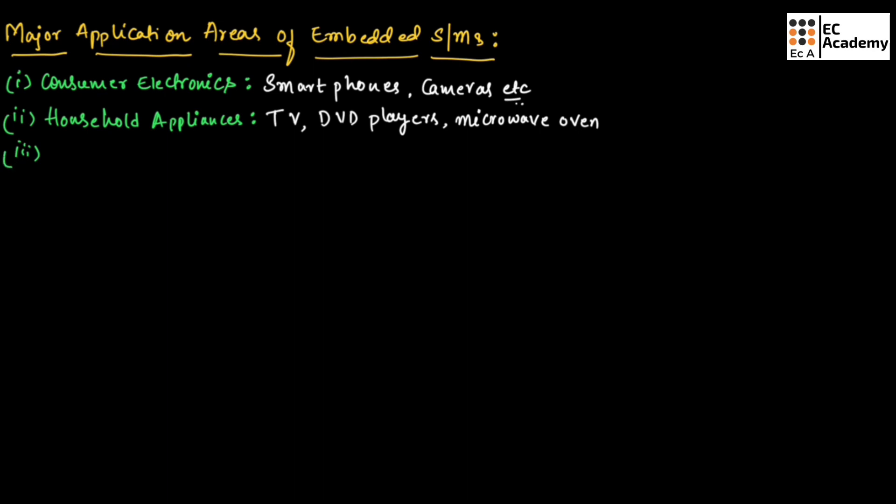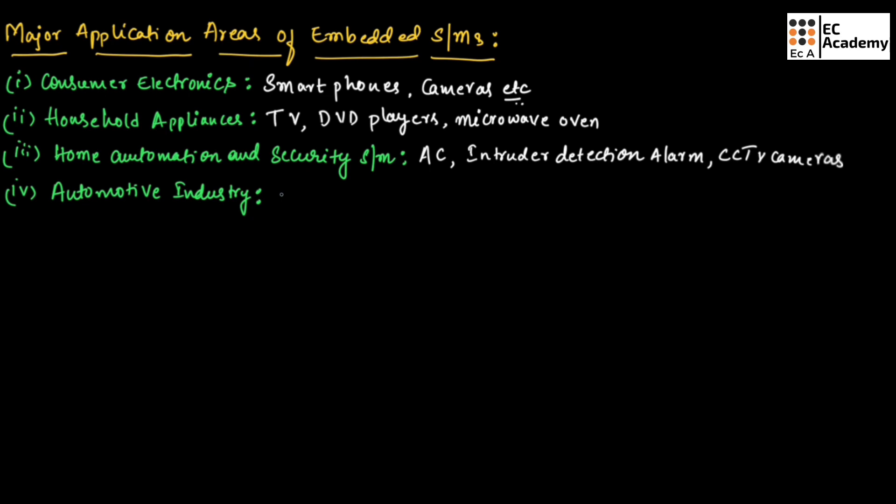Next field of application is home automation and security systems. Examples are air conditioning, intruder detection alarm, CCTV cameras, fire alarm, etc. Next is automotive industries. Examples are anti-lock braking system in vehicles, engine controller, automatic navigation system, etc.